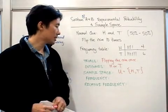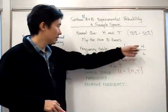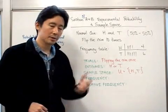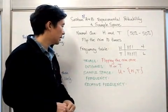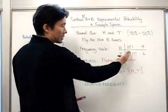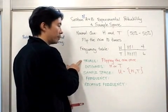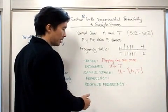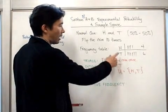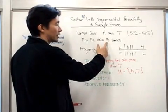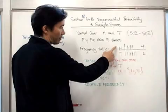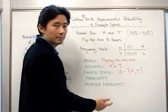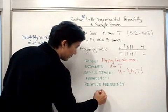The frequency is simply counting how many times heads or tails actually show up over the ten times we flip the coin. So frequency is counting how many times your outcome occurs through the number of trials performed. The relative frequency is a little different — it tells us how many times we actually get a head based on how many times we've done the experiment. So the relative frequency for heads is four out of ten, and for tails it is six out of ten.